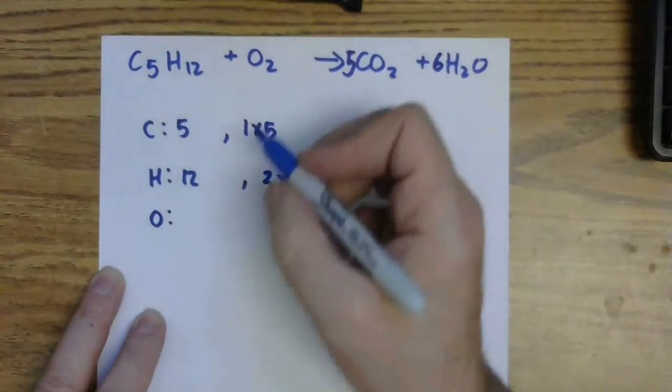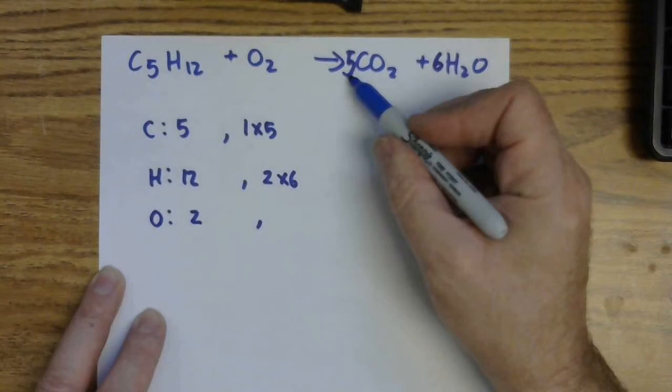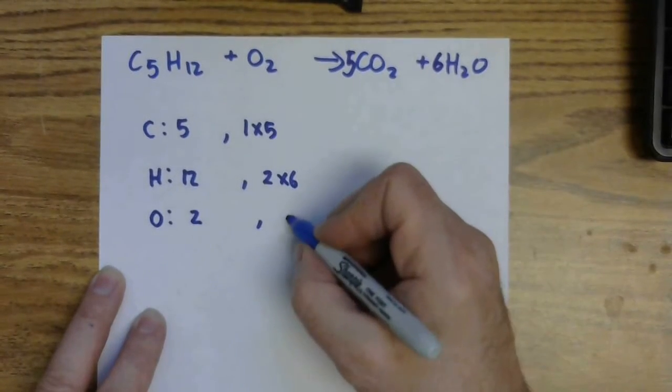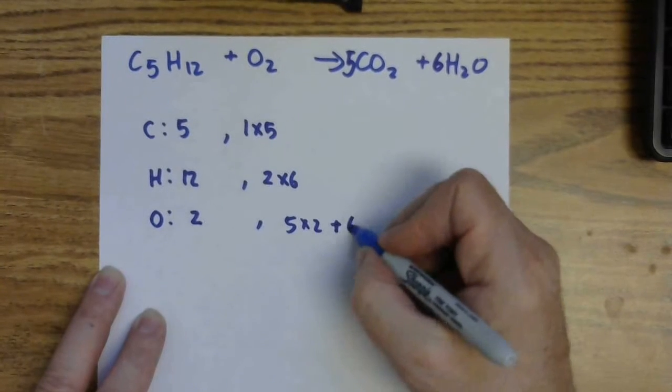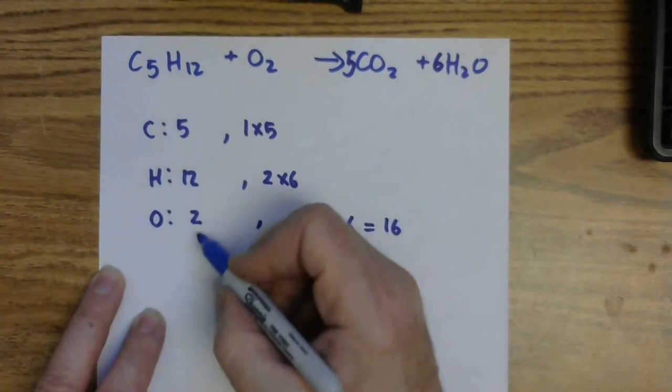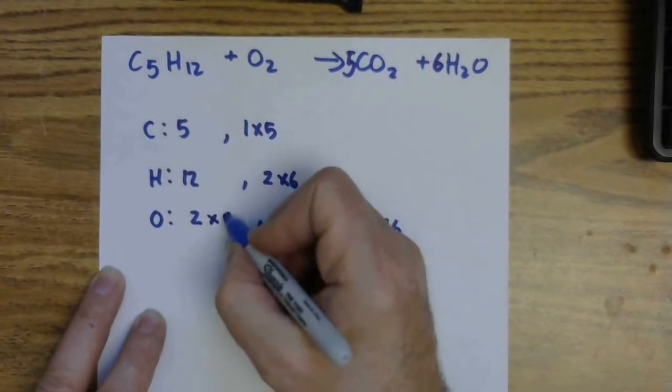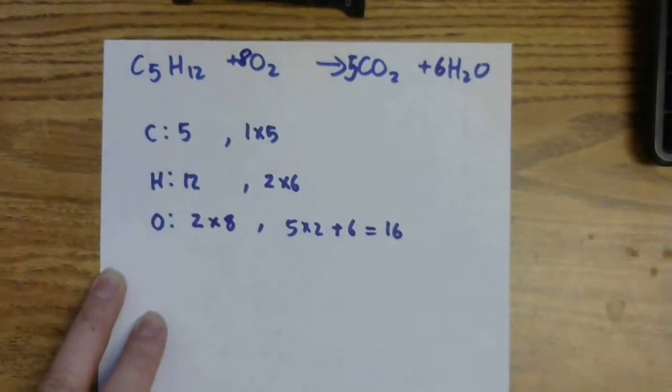For my oxygens, I have two on the left. And then on the right, I've got five times two, and then I've got another six. So that's going to give me 16 oxygens. So to get two up to 16, I will be multiplying by eight, and I will need an eight there.